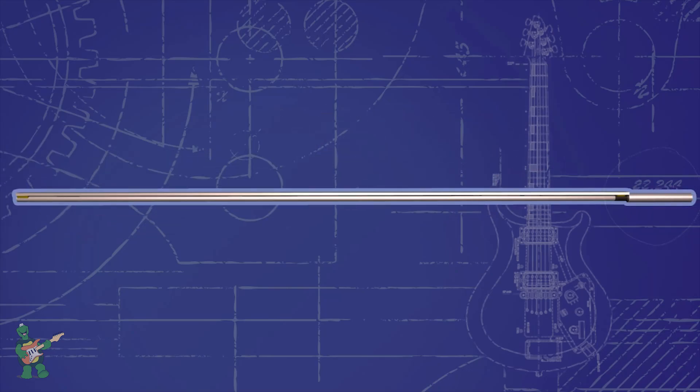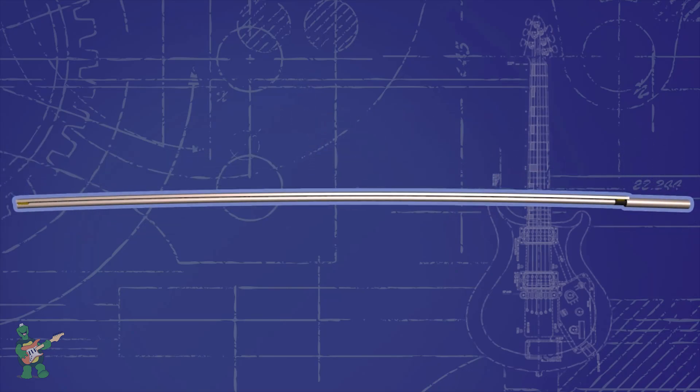As that nut is tightened against the tube, it pushes on the shorter bar just like the vice and generates the inward pressure we need to bend the truss rod.